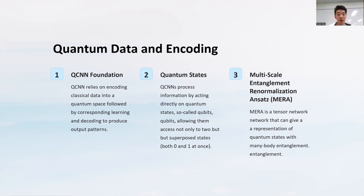The foundation of QCNNs is based on quantum data and encodings. Classical data has to be converted into the realm of quantum mechanics first. Quantum mechanics uses what we call qubits, which are analogous to bits in traditional computers, and are the fundamental units of quantum information used to process data. This quantum perspective enables QCNNs to potentially address complex and high-dimensional datasets more efficiently than CNNs, showcasing the power of quantum computing in machine learning.